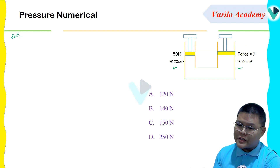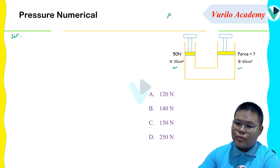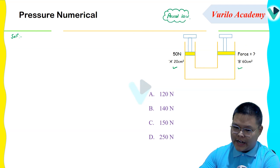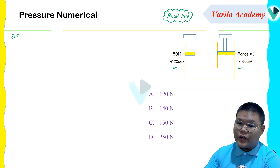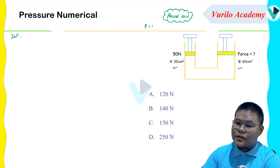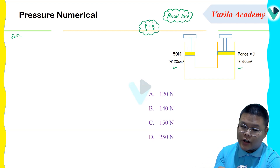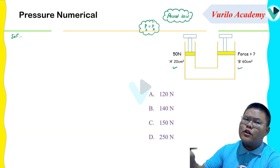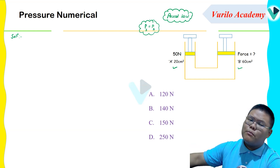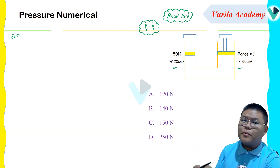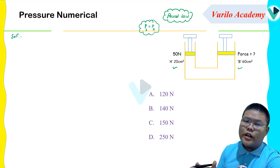I will say Pascal's Law related numerical one. Pascal's Law states that pressure is equal in all directions. P1 is equal to P2, and P1 is equal to P2 is equal to P3 — pressure is equal in all possible directions.